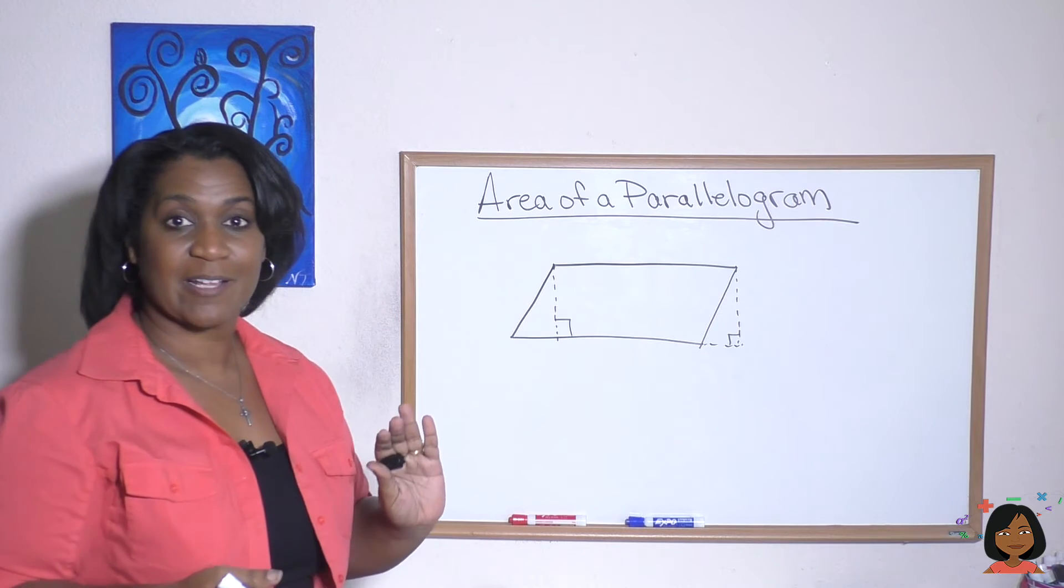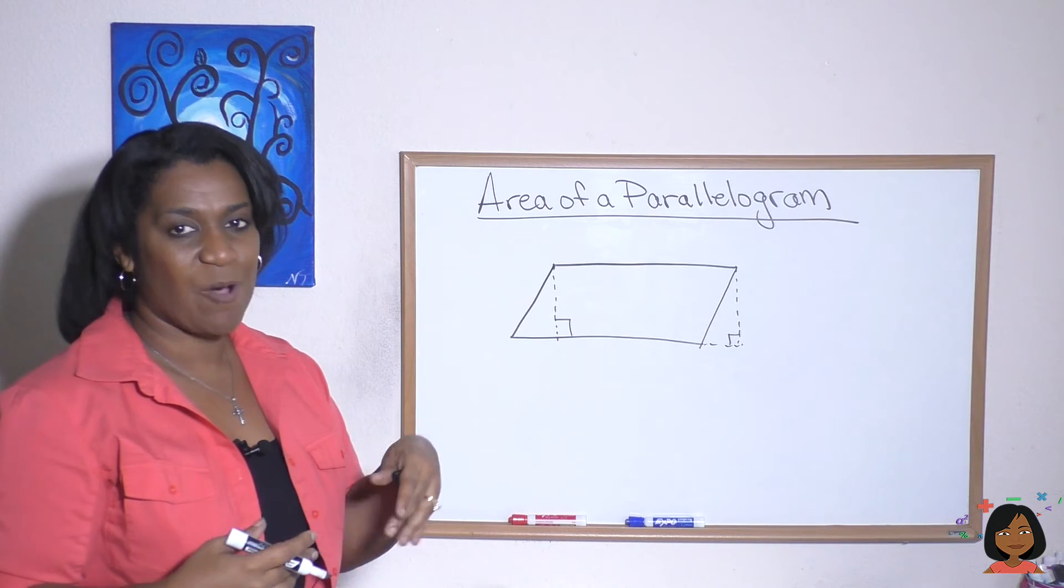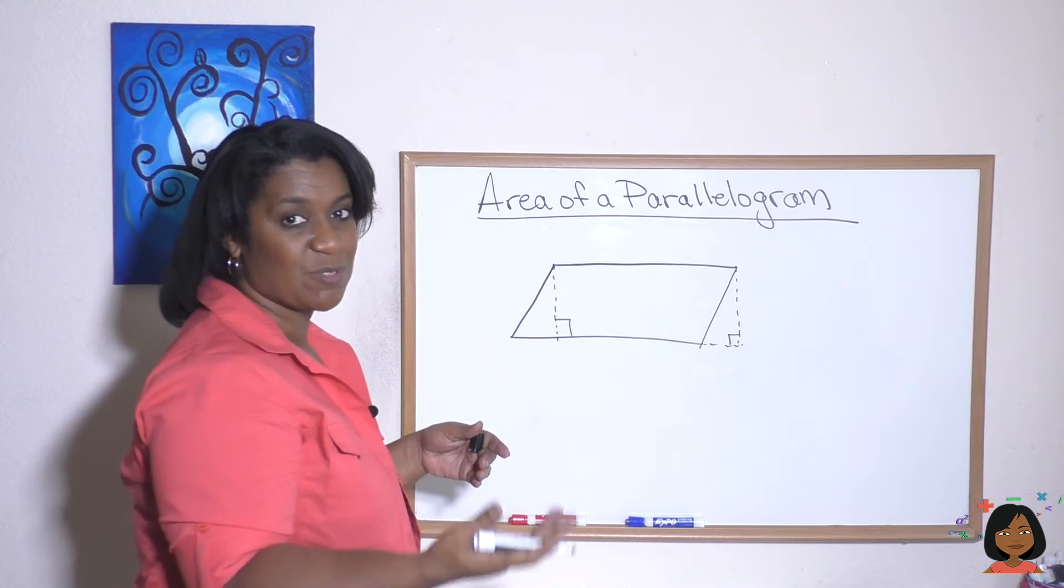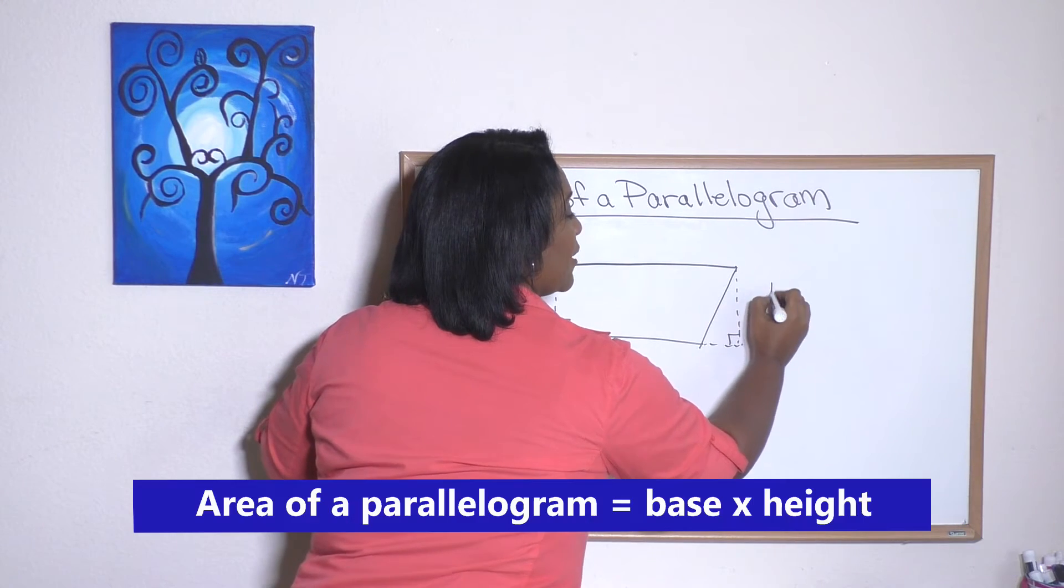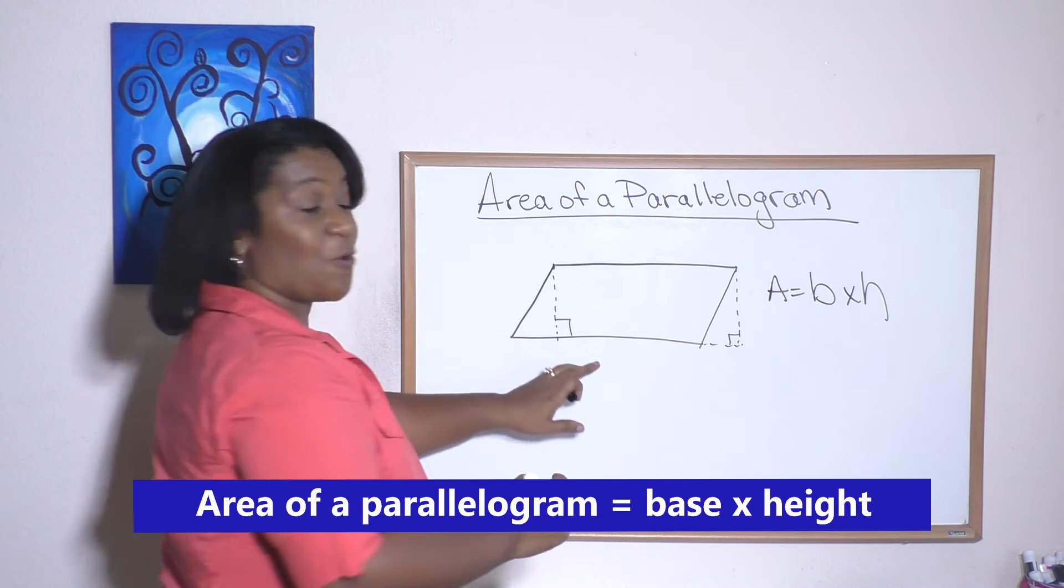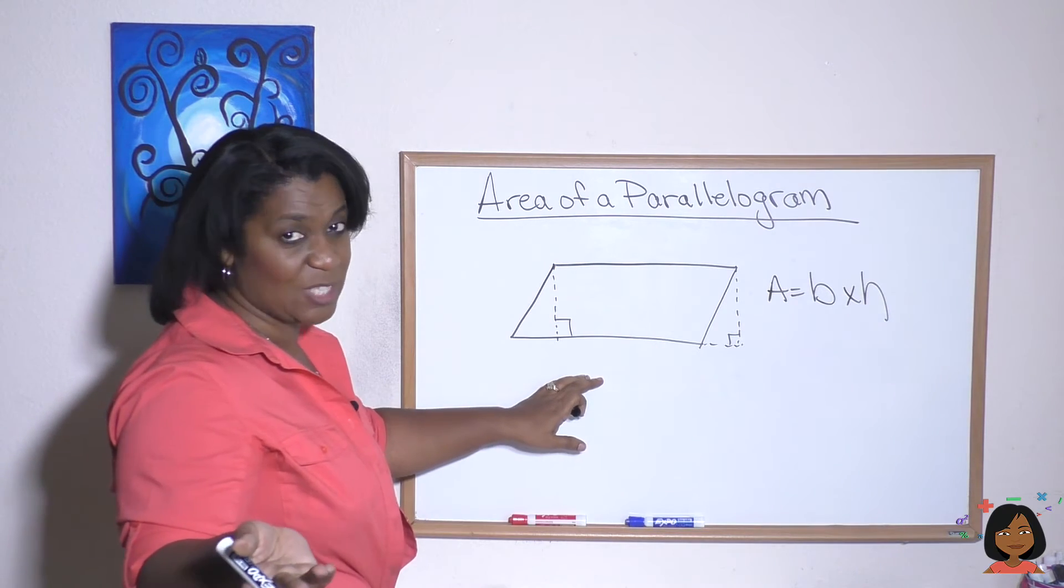So here's the good news: the formula for the area of a parallelogram is related to that one for a rectangle. Where a rectangle is length times width, the parallelogram area is what's called base times height. So base is the same exact thing as what we would call the length in a rectangle.